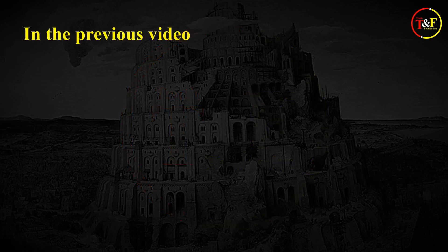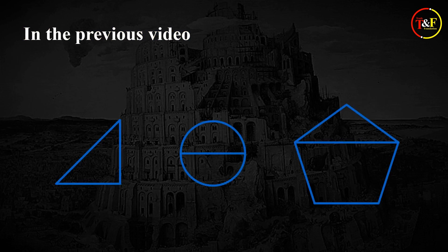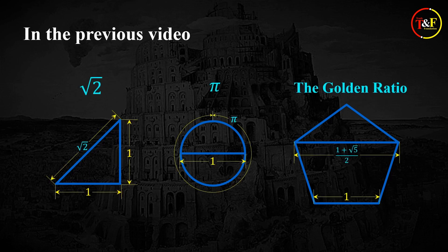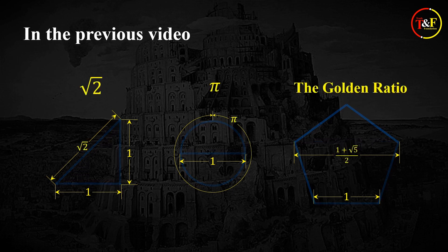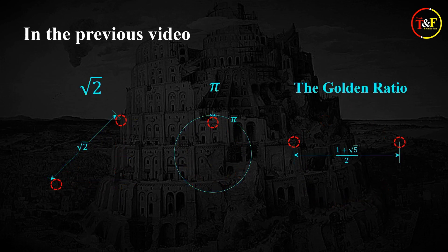Hi, everyone! In the previous video, we started to look into what geometry really is. The reason is that it was through geometrical justifications that irrational numbers were introduced into mathematics and also became considered numbers in the end. As we dug into it, we found that because geometric figures consist of sizeless points, irrational numbers arise as the length of almost all line segments.